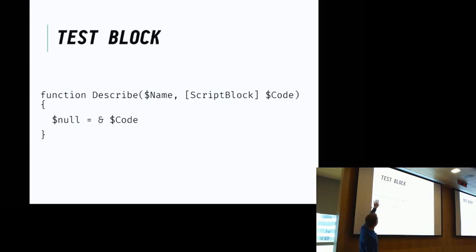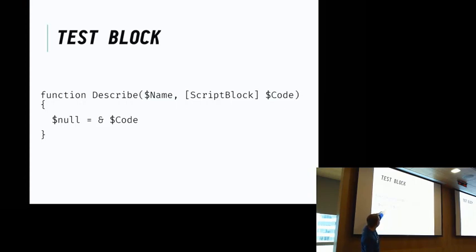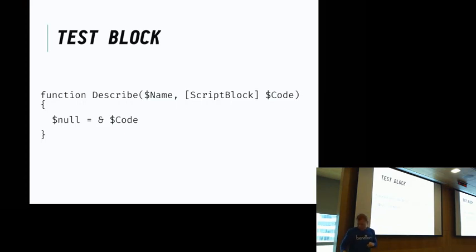Internally, it's very simple. We just have a function called 'describe'. We have a name that we give to it so we can print it to the screen. Then we have a piece of code represented by a script block that we just execute, and then we discard all the output — we assign it to null, which is faster than piping to Out-Null. Internally it just executes code. Since 'it', 'describe', and 'should' are all functions, this is just pure PowerShell — no magic in it.